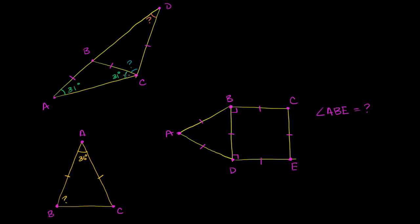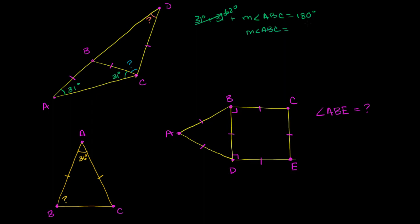If we know two of the angles in a triangle, we can always figure out the third — they have to add up to 180 degrees. So 31 degrees plus 31 degrees plus the measure of angle ABC is equal to 180 degrees. That's 62 degrees total; subtract 62 from both sides and you get the measure of angle ABC is equal to 118 degrees.